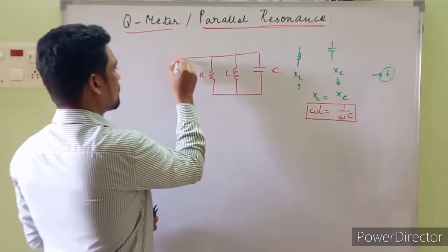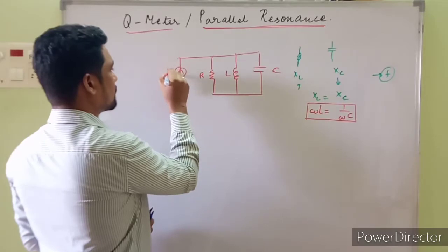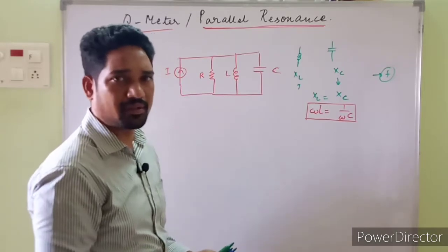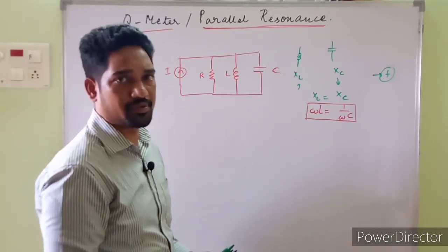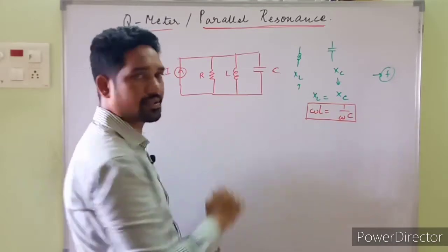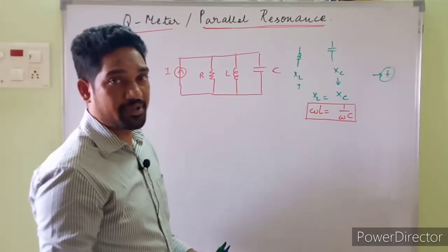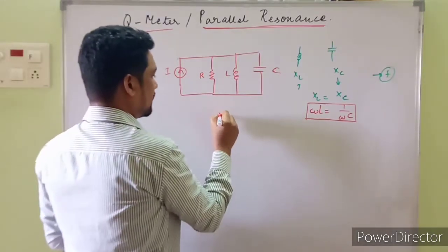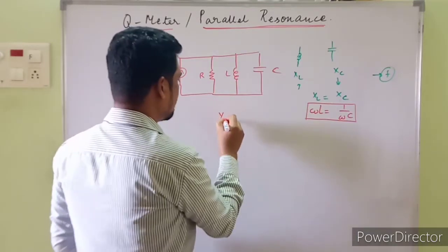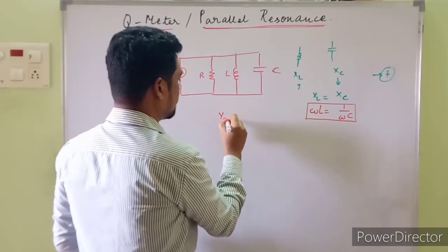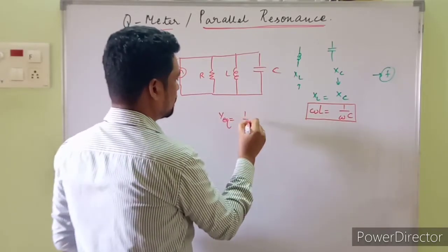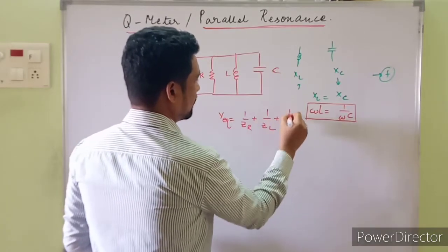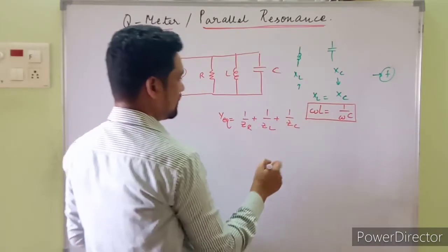So we need to have a current source I here. Now, what is the total impedance of the circuit? Rather than impedance, it would be better to evaluate the admittance. Why? Because it's a parallel circuit. Evaluating the admittance would be easier rather than impedance in a parallel circuit. So the equivalent admittance Y_eq is equal to 1/Z_R + 1/Z_L + 1/Z_C.